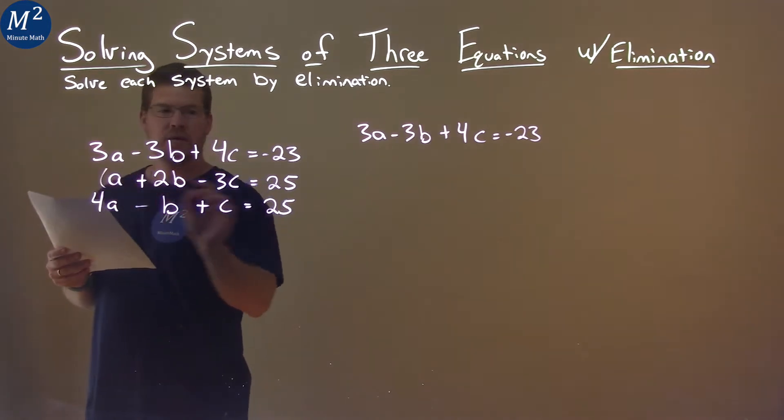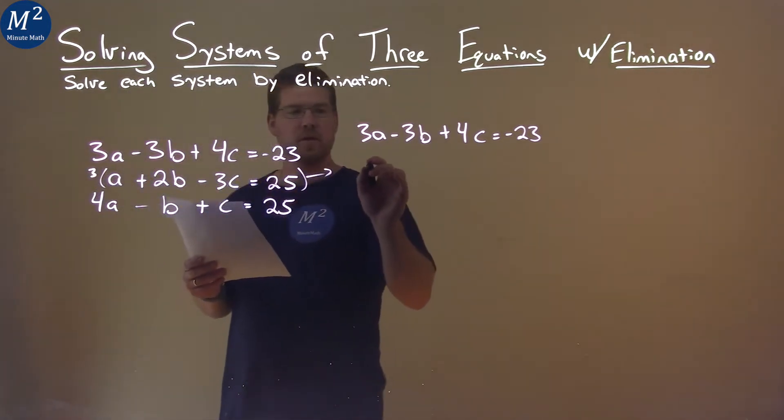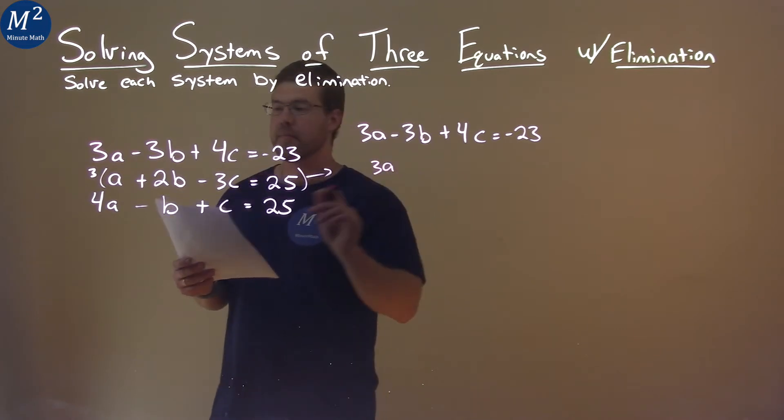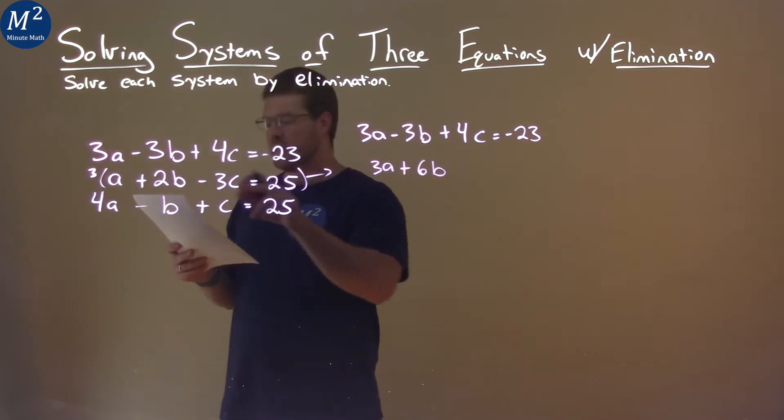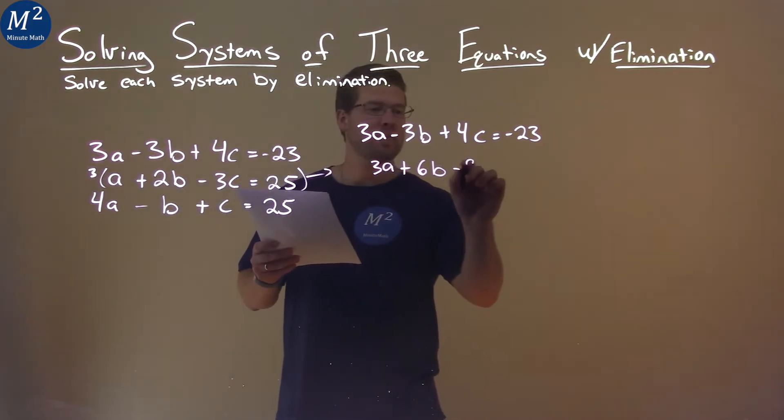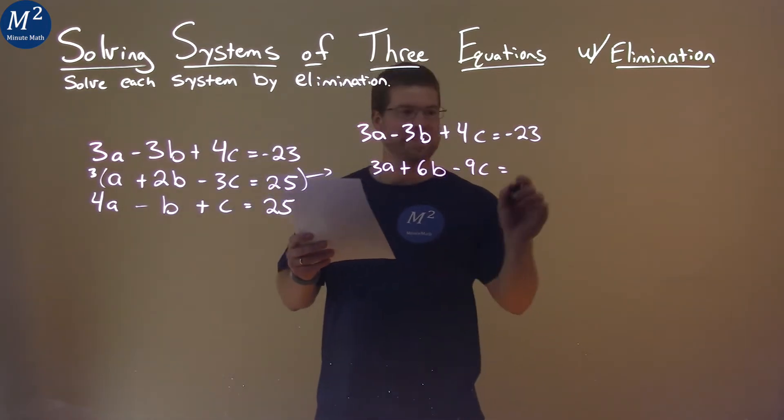The second equation, if I multiply it by 3, what do we get? 3 times A is 3A, 3 times 2B is plus 6B, 3 times negative 3C is minus 9C, and 3 times 25 is 75.